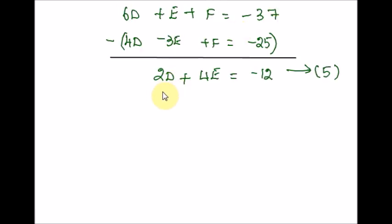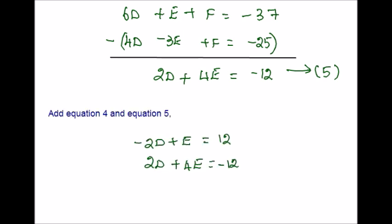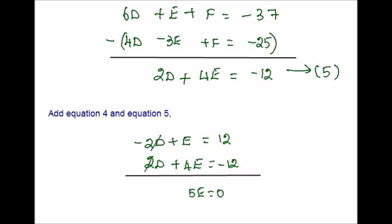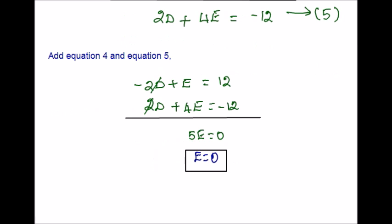Adding Equation 4 and Equation 5: −2d and +2d cancel out. 4e + e = 5e. On the right-hand side, 12 − 12 = 0. Dividing both sides by 5, we get e = 0, because 0 divided by any number is 0.